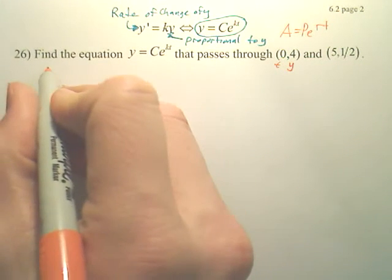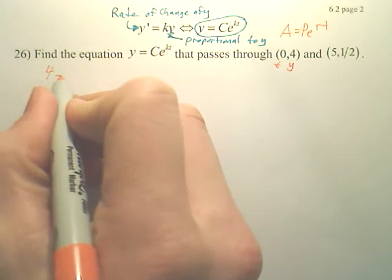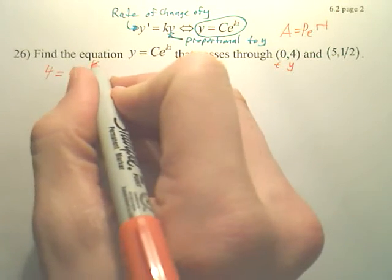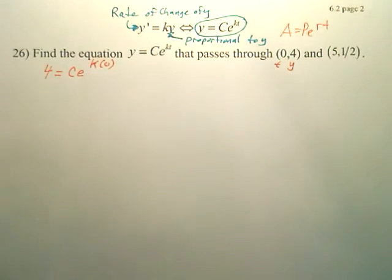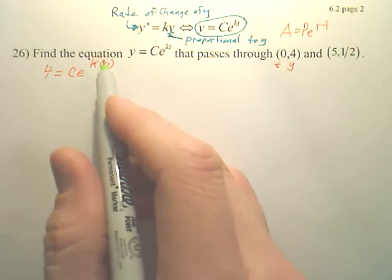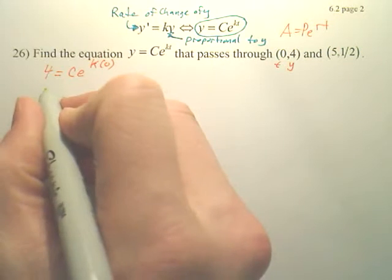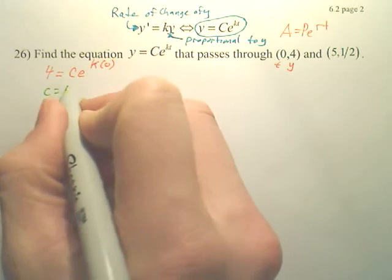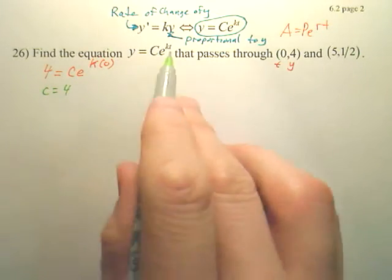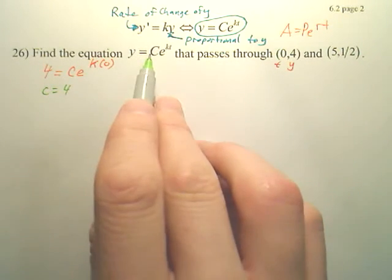So if I take my equation, you get 4 equals ce^(k times 0). So I basically, in that equation, I plugged in 0 and 4. And the reason I plugged that number in, k times 0 is 0. What's e to the 0? 1. So don't I basically have c is 4. Doesn't that make sense that c is 4? Because isn't p or c the initial value?